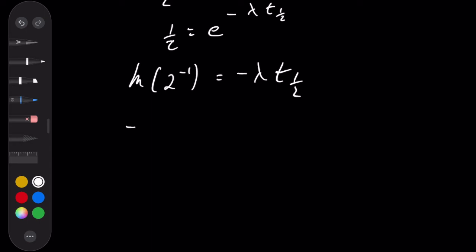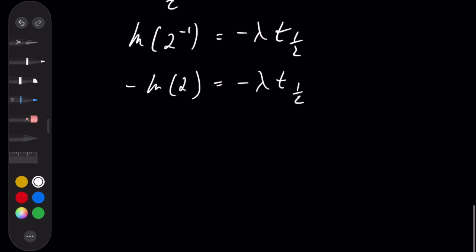So we end up with minus ln 2 equals minus lambda t a half. And the goal here is to actually get an expression for this thing, for the half-life, which we can now do.